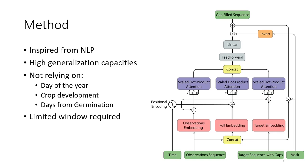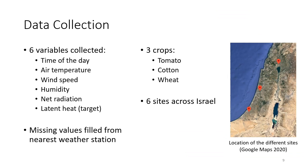So let's have a look at the data we are working with in practice. The first five variables describe the weather condition: the time of the day, the temperature, the wind speed, humidity, net radiation, so basically the solar radiation. From these five variables, we want to predict the latent heat or the evapotranspiration. These data are collected in three crops, tomato, cotton and wheat, on six sites across Israel.